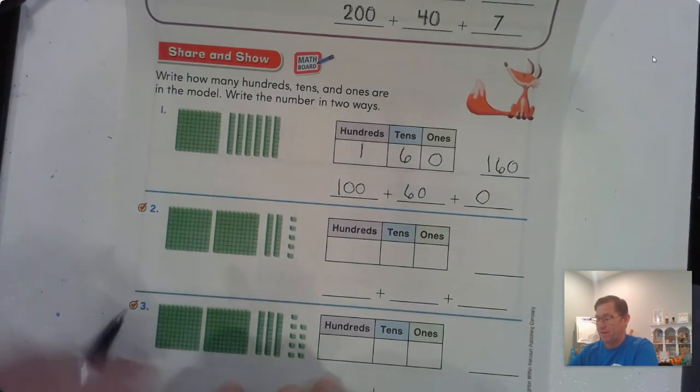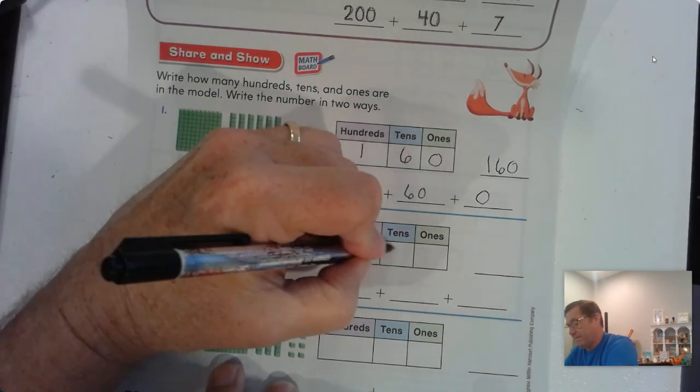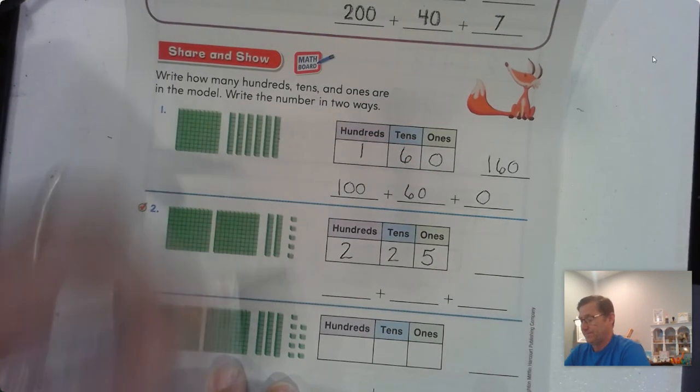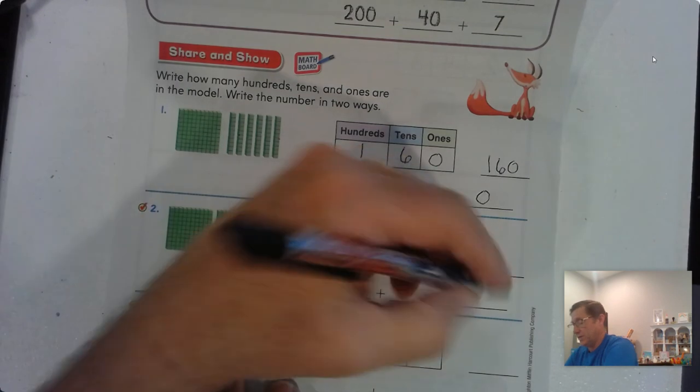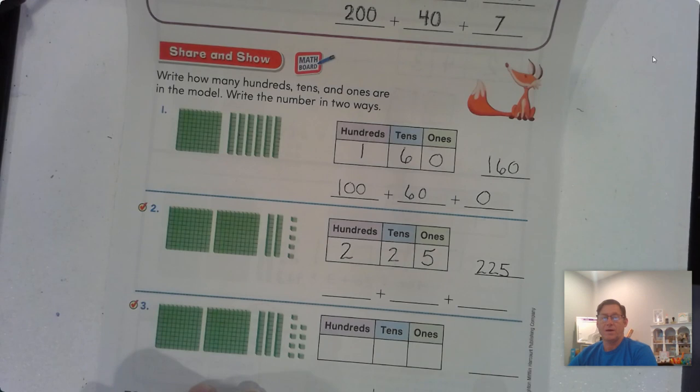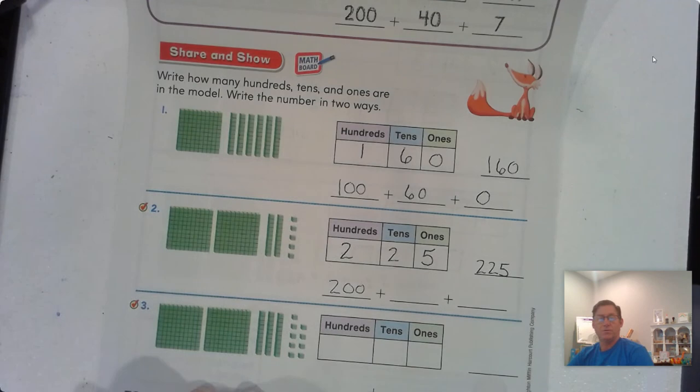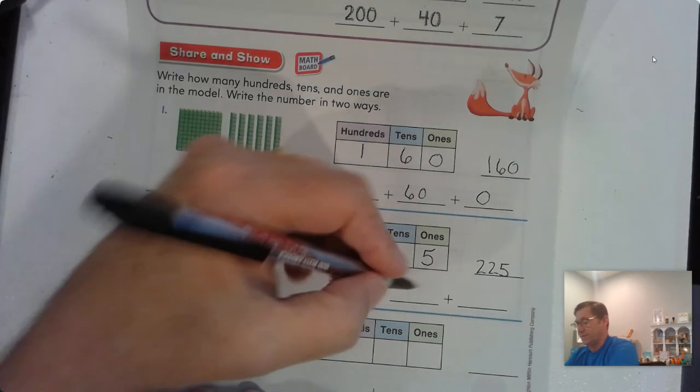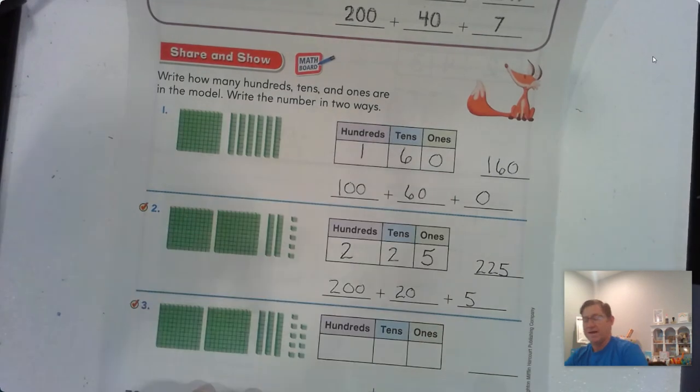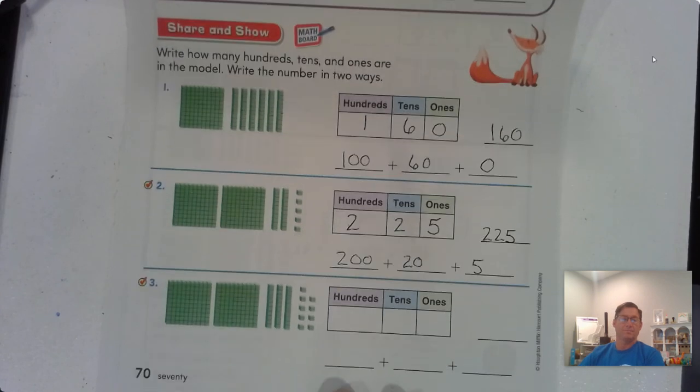All right. How about number 2? We have 2 hundreds, we have 2 tens, and we have 5 ones. So that's 225. So how do we write that by its place value? 2 hundreds is written as 200, 2 tens is written as 20, and 5 ones is 5. Two hundred twenty-five.